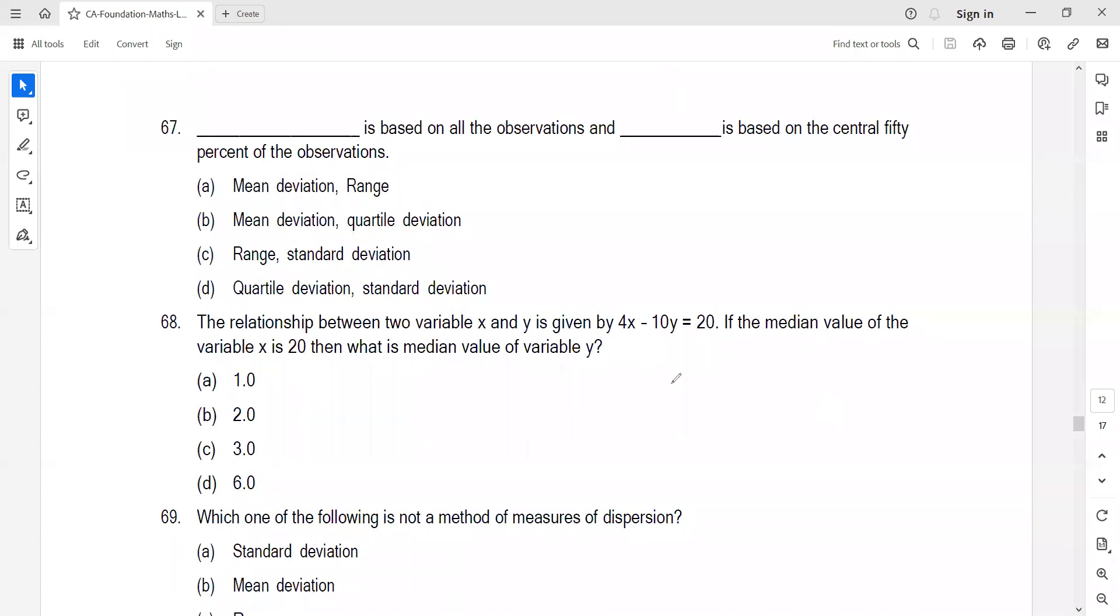Question 67: Mean deviation is based on all observations. Quartile deviation is based on the central 50%. If you remember, inter-quartile range is Q3 minus Q1. Quartile deviation or semi inter-quartile range is Q3 minus Q1 divided by 2.